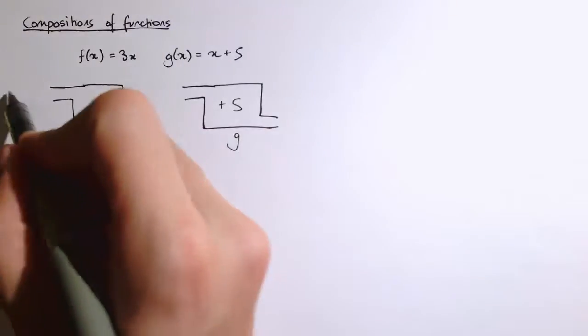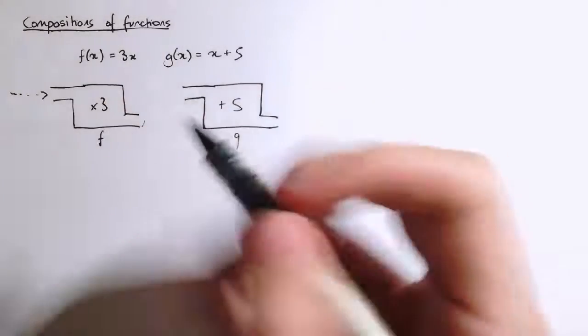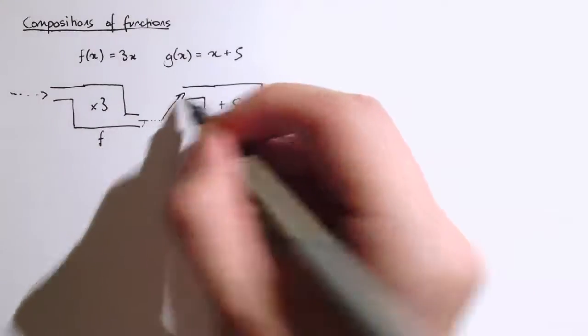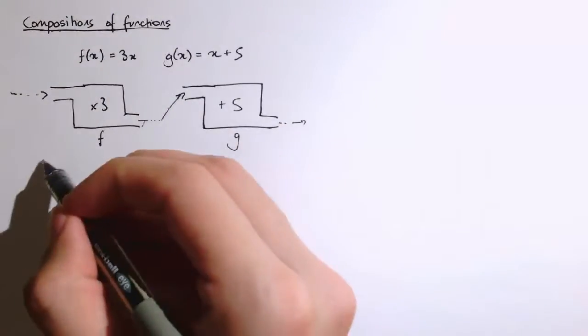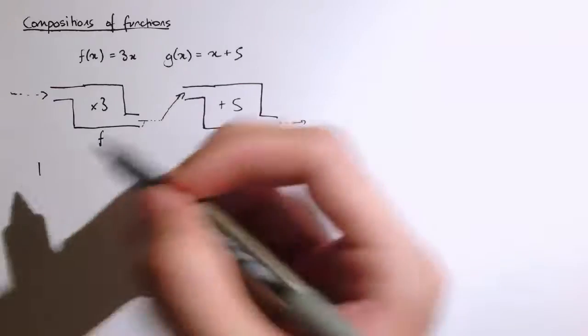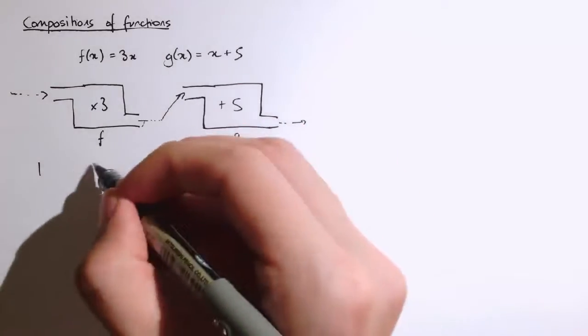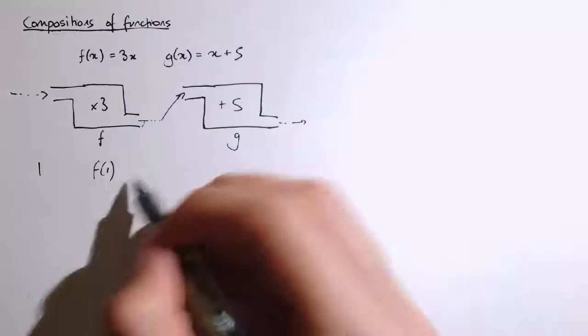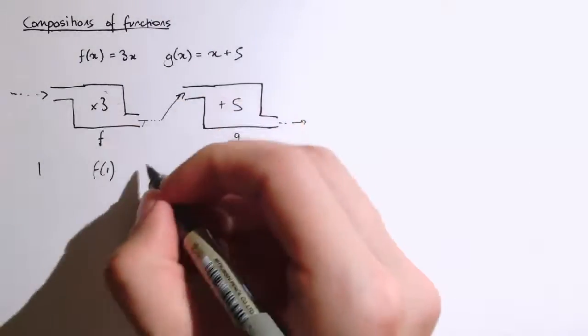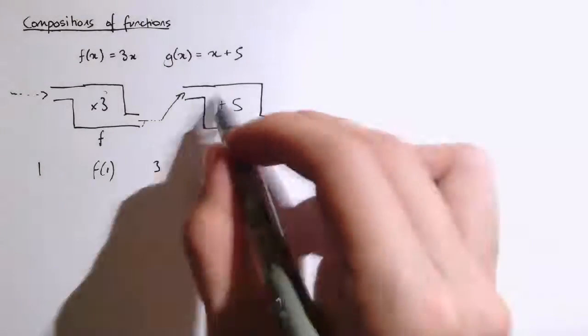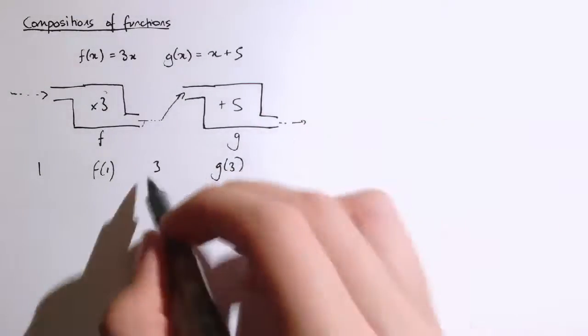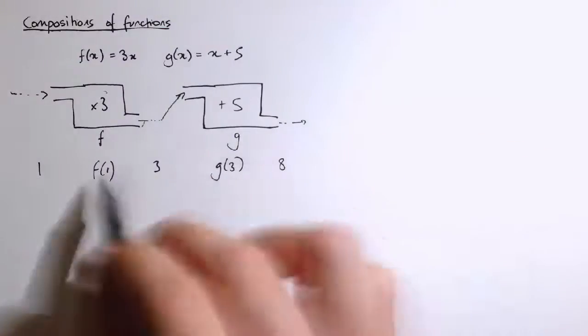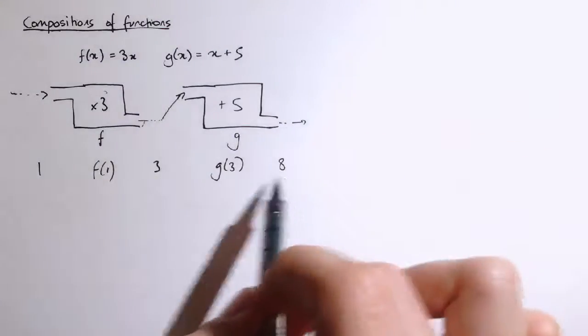So actually, I'm going to put some inputs into this first machine, and I'm going to take the output of this machine and put it into the second machine, and then see what I get out overall. So for example, I might start with 1 as my input, and then apply f to it. So I've got to apply the function to 1, so that's just trebling. So that will give me 3, and then I'm going to take 3, put it in here, and so g of 3, well, that's 3 plus 5, which is 8. So the overall result of applying these two functions together is 8.